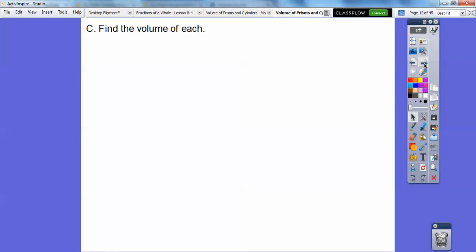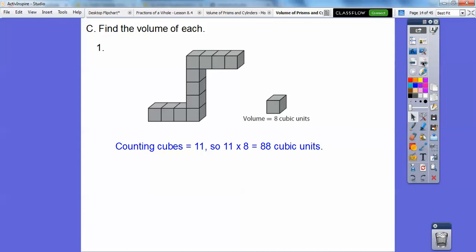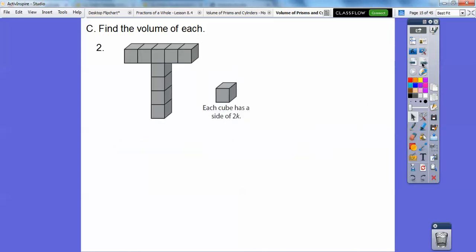Find the volume of each. So here we have this figure, and it says one of these, the volume is 8 cubic units, so we've just got to count up how many there are. So I count 11 of these, so if we count 11, it's 11 times 8 or 88 cubic units. Don't forget the cubic units part.